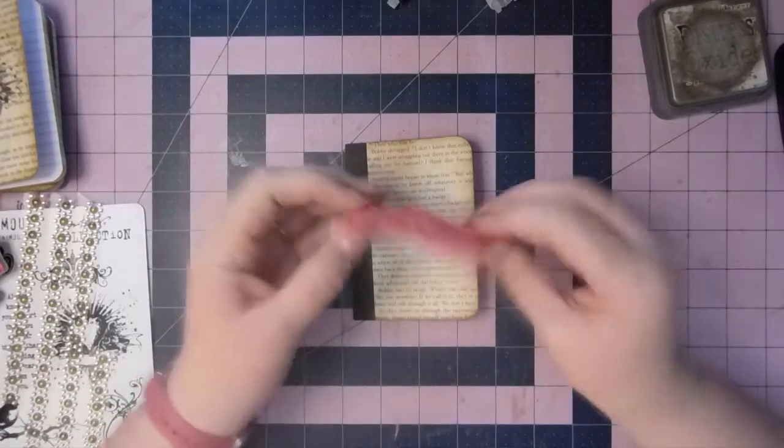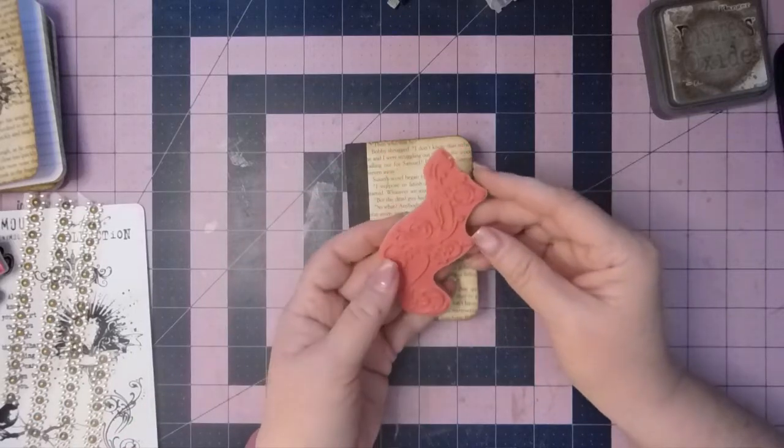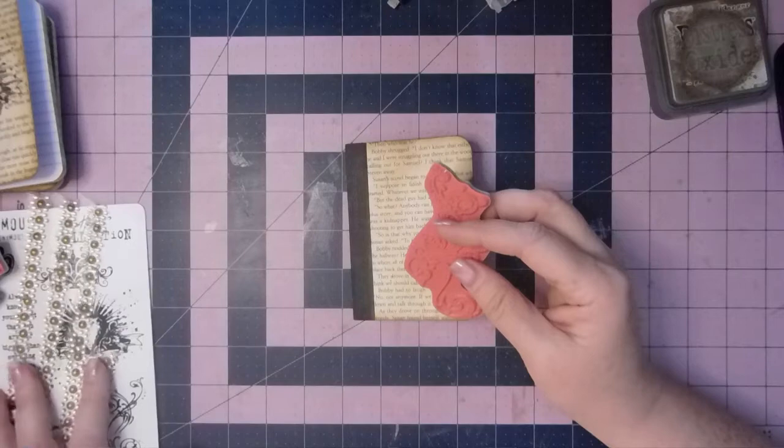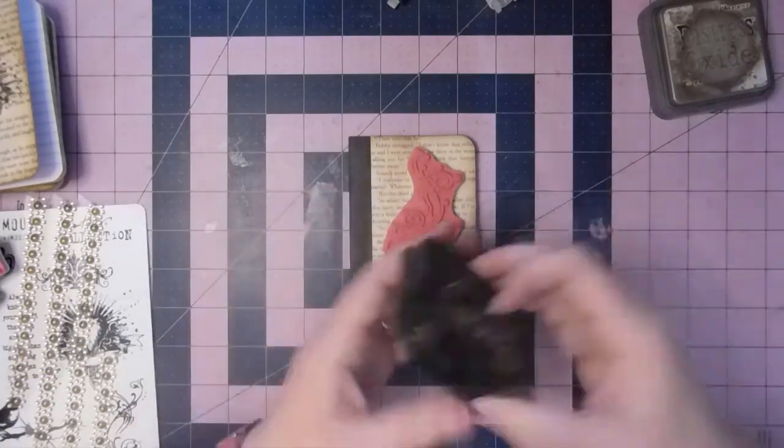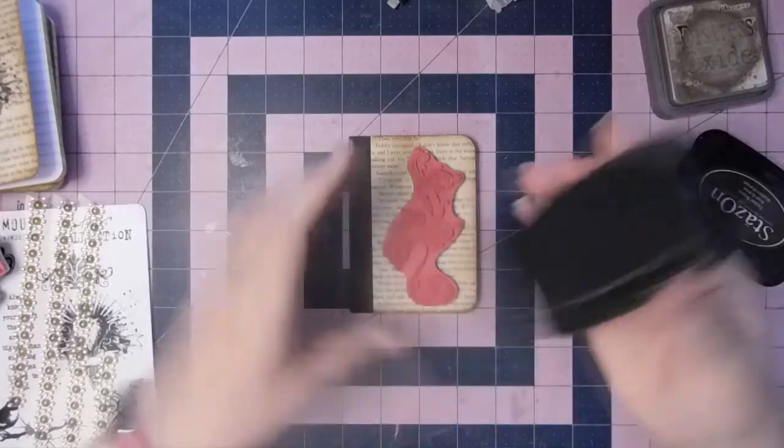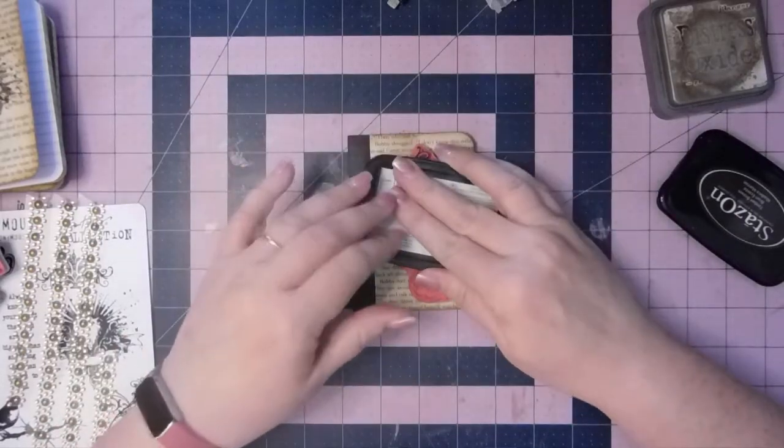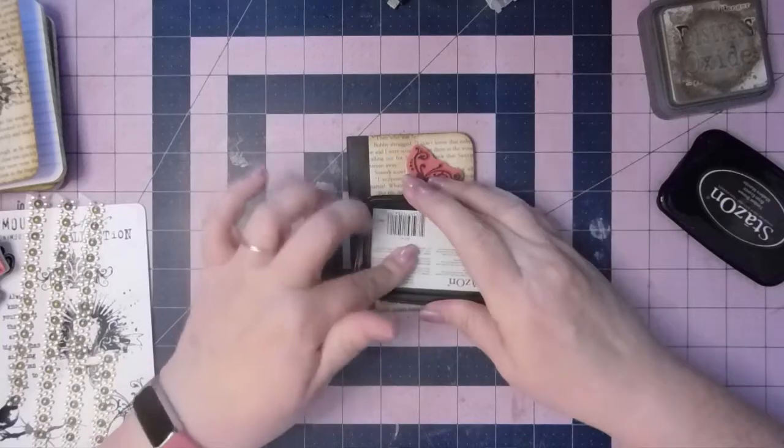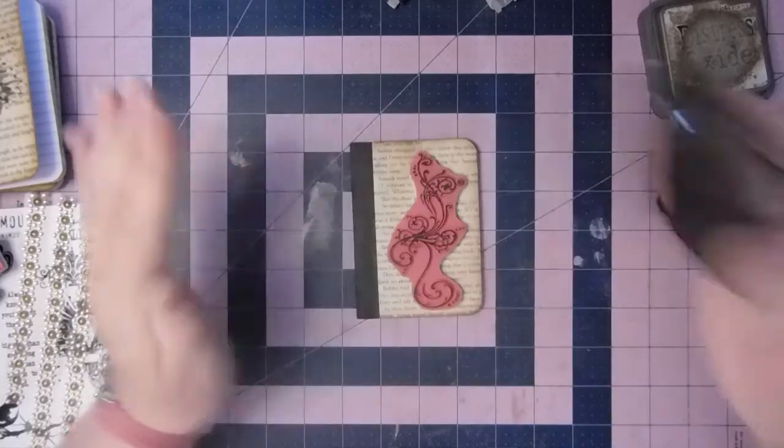So I thought I would use this little flourish. This is a Tim Holtz. This one is urban chic. That's the set I'm using. And I've got my little stays on and the stays on that I'm using is a timber brown. That's the color I'm using.